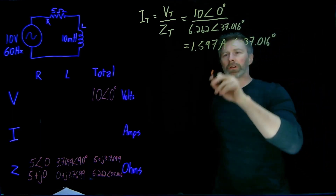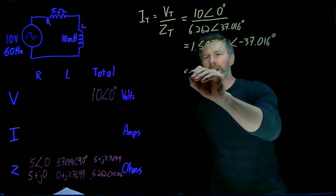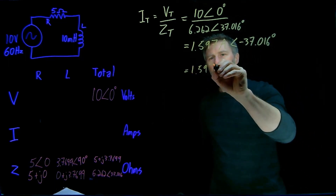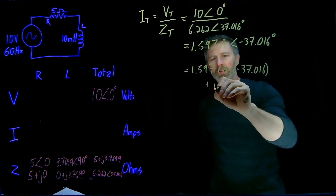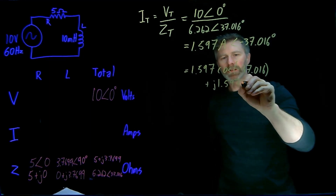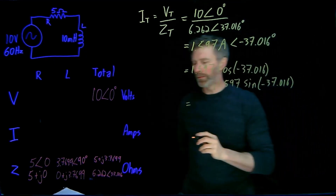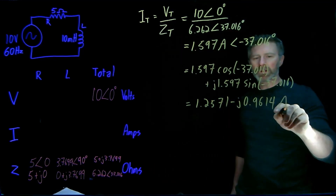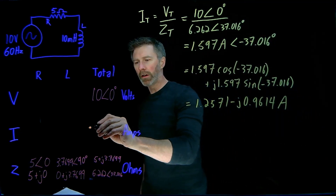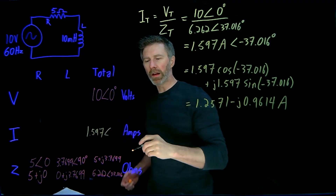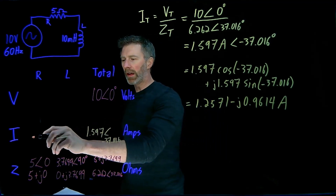We can convert this from polar notation into rectangular notation. It'll be 1.597 cos of negative 37.016 plus j times 1.597 sine of negative 37.016. I'm only going to write the polar notation part in the table here: 1.597 at an angle of negative 37.016 degrees. And that's the same for the inductor and the same for the resistor.